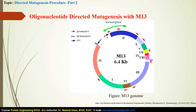Now we have some basic idea about how to modify DNA using a suitable mutagen. Coming to the question asked at the beginning: what is M13? M13 is a filamentous bacteriophage which infects E. coli bacteria. The M13 genome has circular single-stranded DNA of 6.4 kilobases and codes for a total of 10 genes, denoted by Roman numerals 1 up to 10.